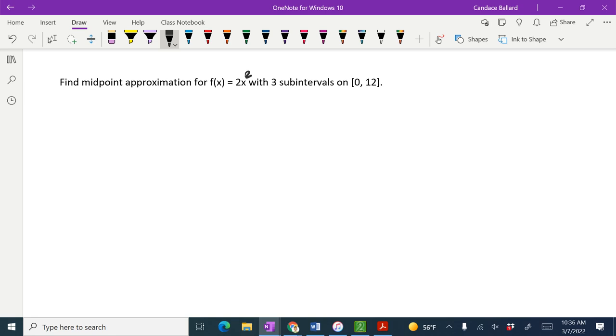So we're gonna go 2x squared with three subintervals on 0 to 12. I was trying to get us something where we could find a middle value, hopefully. I might not have done that very good. We'll see how it goes.